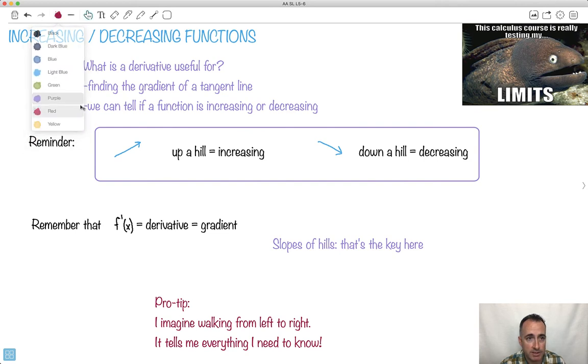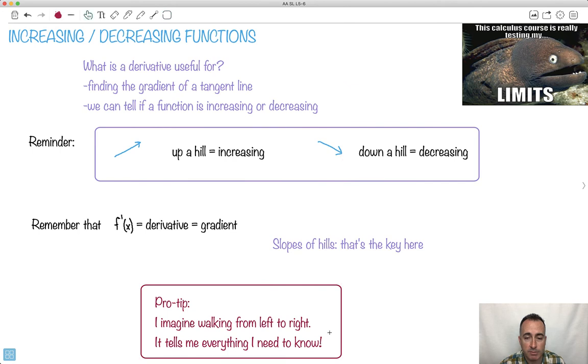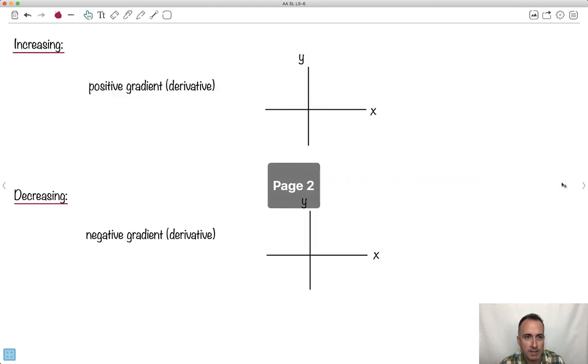So a little pro tip is that I just imagine I'm walking from left to right, and that tells me everything I need to know. So if I'm going up a hill, then the derivative is positive. It's an increasing function. I might be going downhill. I might be flat. Then I know the derivative is zero, and so on. So this is the main concept.